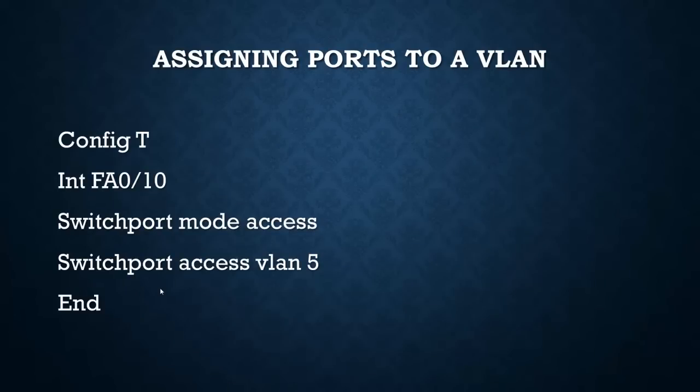To assign a VLAN to a port, from global mode, go into the interface: 'interface fa0/10', enter, 'switchport mode access', enter, then 'switchport access vlan 5.' Now that switch port is in VLAN 5. End, and that's all there is to it. There are two steps: you've got to create the VLAN, and then assign the VLAN to a physical interface. Creating the VLAN creates the virtual interface; then you assign that virtual interface to a physical port.